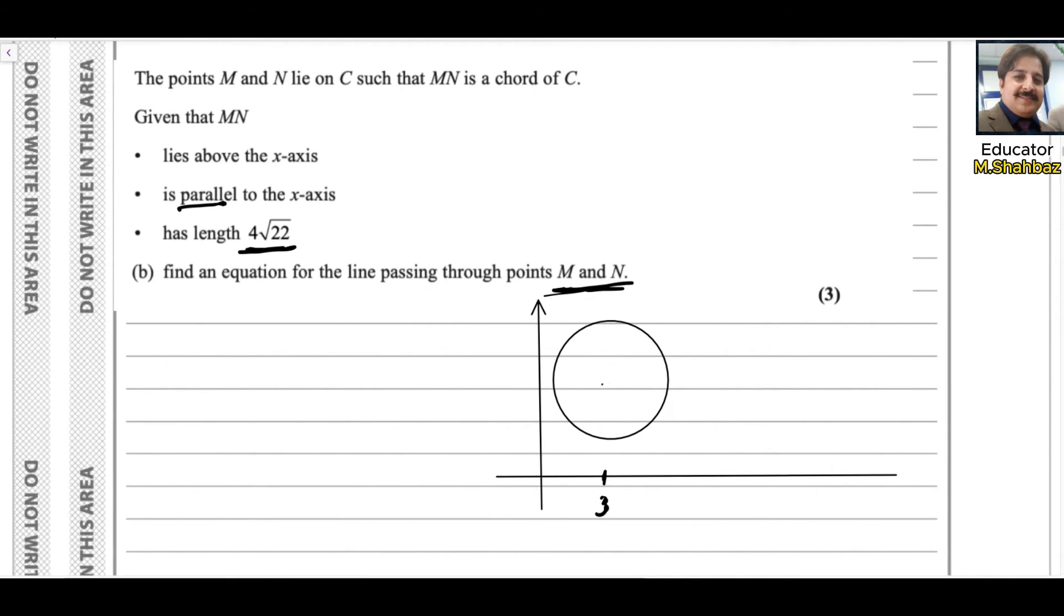This is the center A, that is (3,5). MN is a chord and it is parallel to the x-axis. If we draw a perpendicular from the center A onto the chord MN, this perpendicular will bisect it. Let's say this bisects at X.